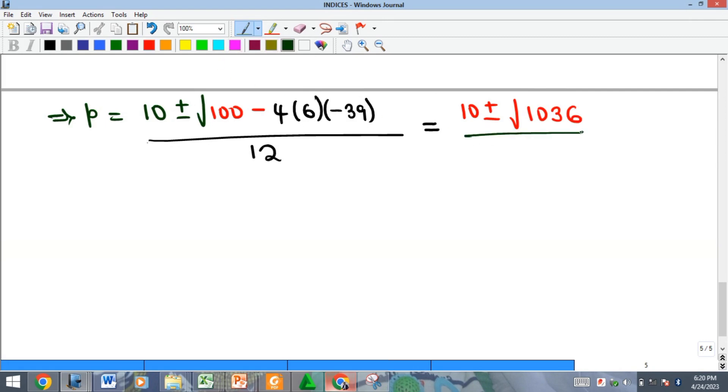When you take that square root, you're going to have 10 plus or minus approximately 32.2. That's the square root of 1036, and that's over 12.